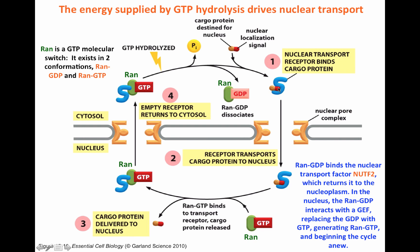RAN-GDP in the cytoplasm binds to a transport factor called NTF2, which transports RAN-GDP back into the nucleoplasm. Inside the nucleoplasm, RAN-GDP interacts with a guanine exchange factor that helps replace GDP for GTP, recharging RAN-GTP to bind another nuclear transport receptor that has brought cargo inside, repeating the cycle. So you have the recycling of the nuclear transport receptor and the recycling of RAN-GDP back to GTP with the effect of the protein NTF2.